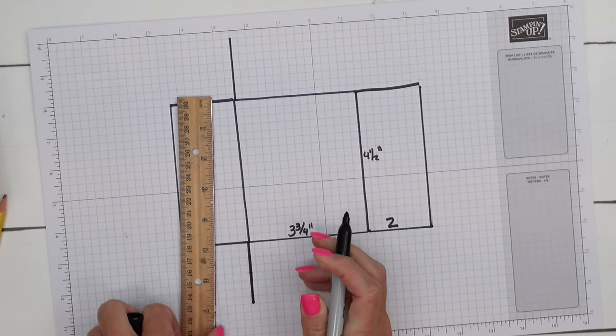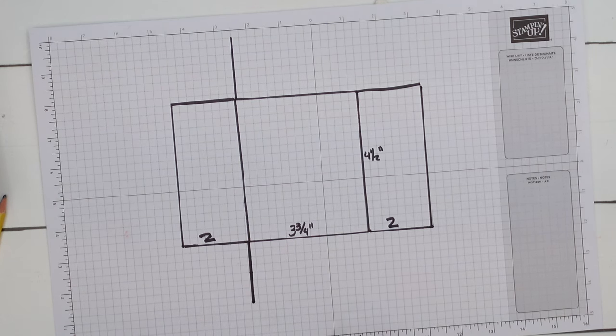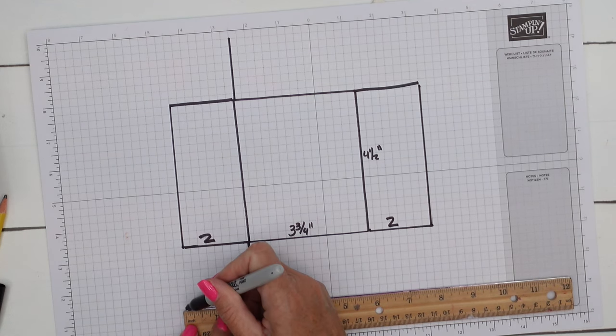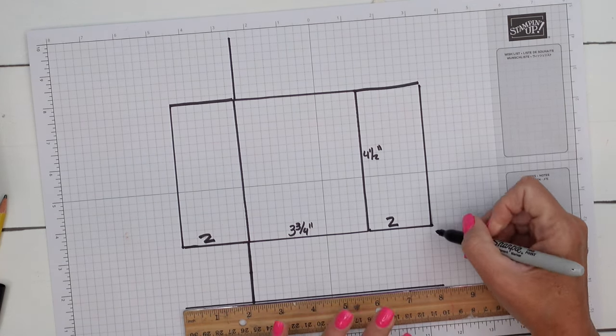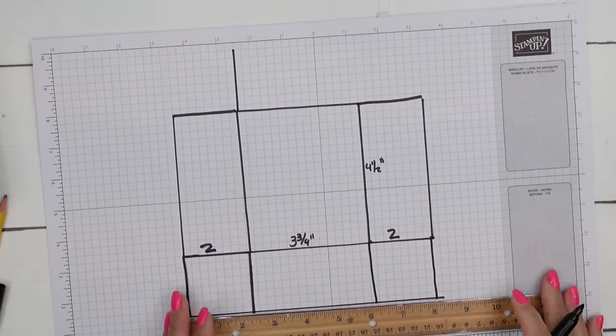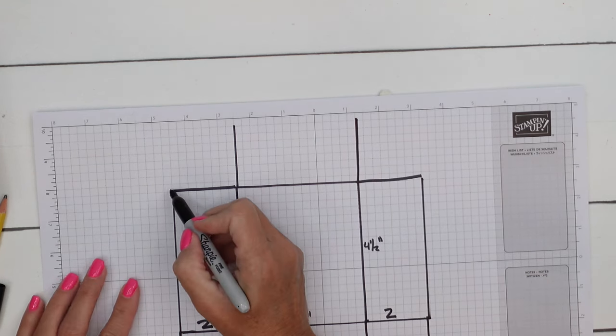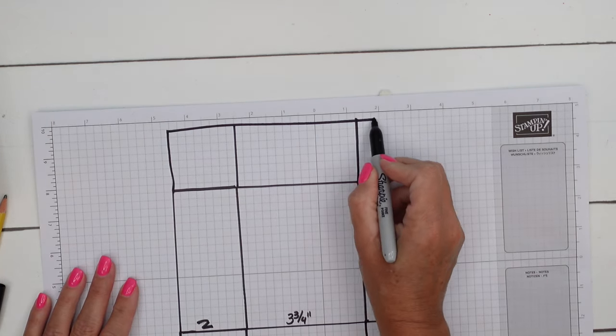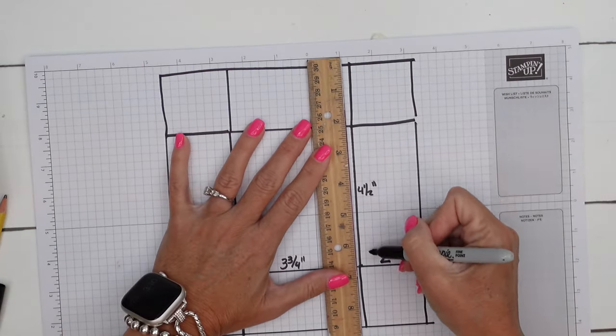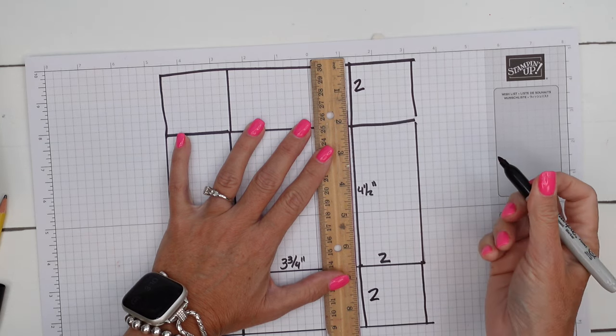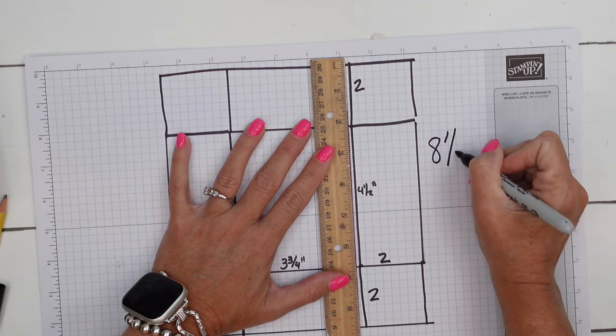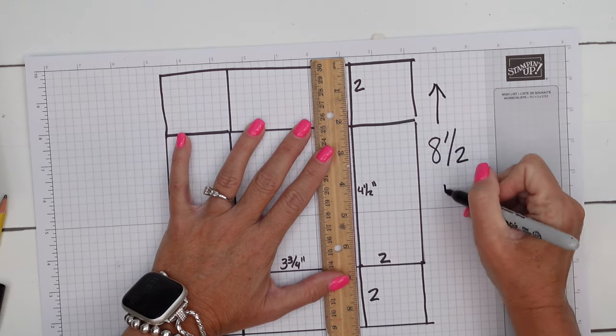Then you're going to do the same thing on the top and the bottom, two inches and two inches. And then you're just going to draw that line over to meet those points as well. So here and here and up here, two inches. So this side right here, we measured four and a half and we've added two and two. So that would be four, five, six, seven, eight, eight and a half. So this side measures eight and a half inches.